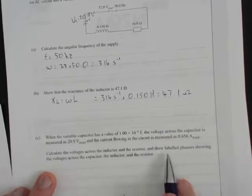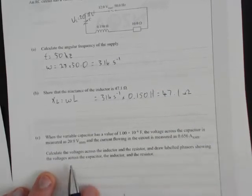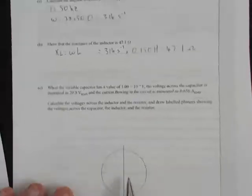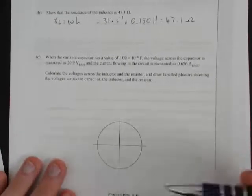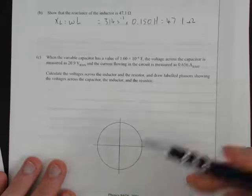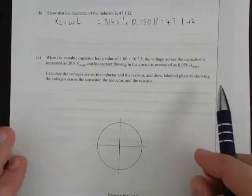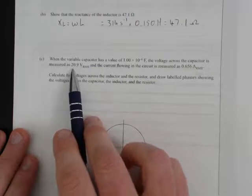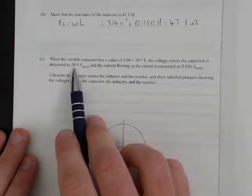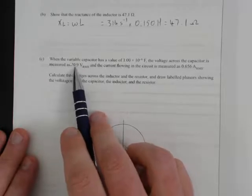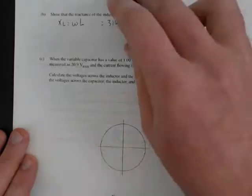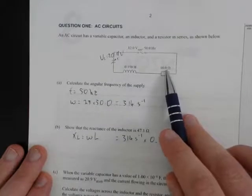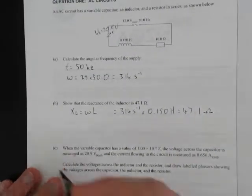Calculate the voltages across the inductor and resistor, and draw labeled phasors showing the voltages across the capacitor, inductor, and resistor. When we draw these phasor diagrams, the vectors need to be to scale. We know the capacitor voltage vector magnitude is 20.9, but we don't know the inductor or resistor yet. We can work them out.